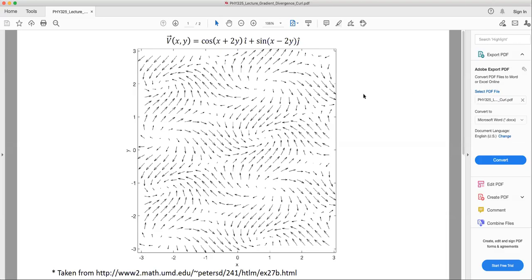In this video, I want to go over an example of what the curl looks like for a particular vector field. And we're going to look at the same vector field as for the divergence module.